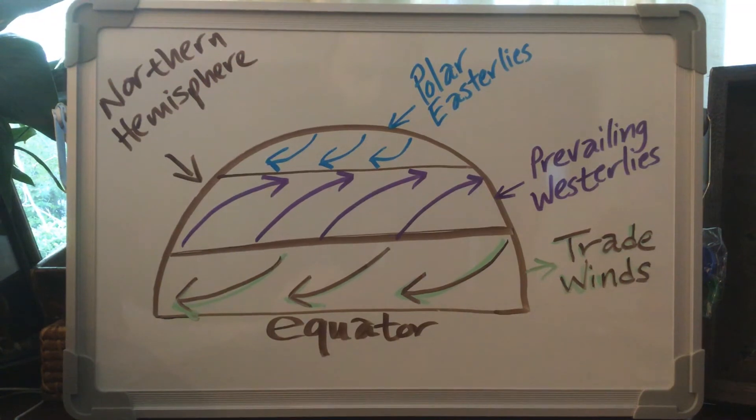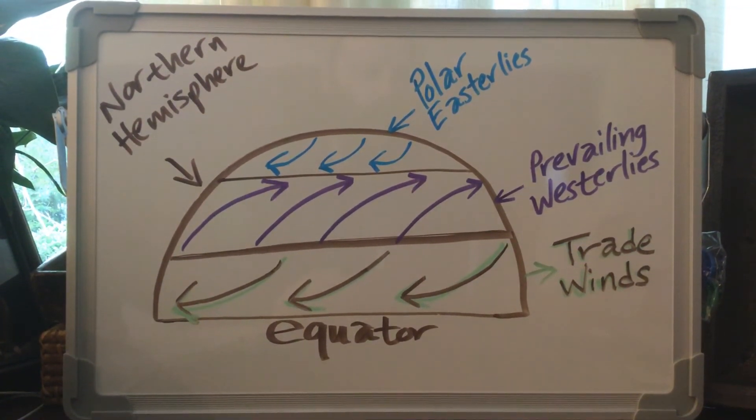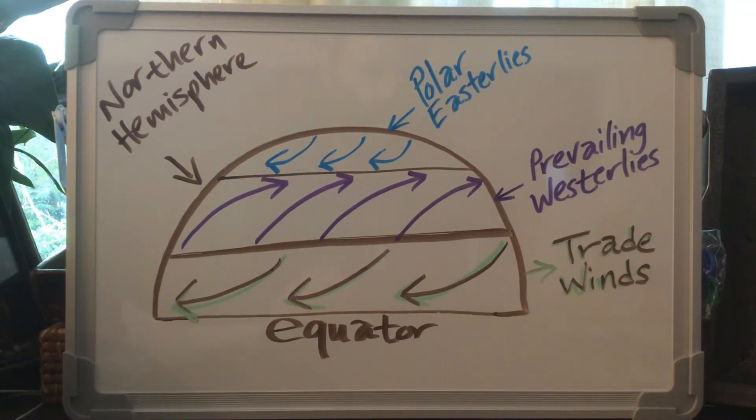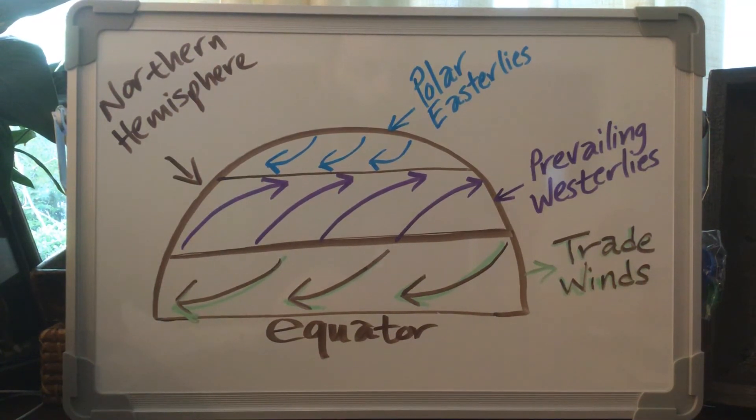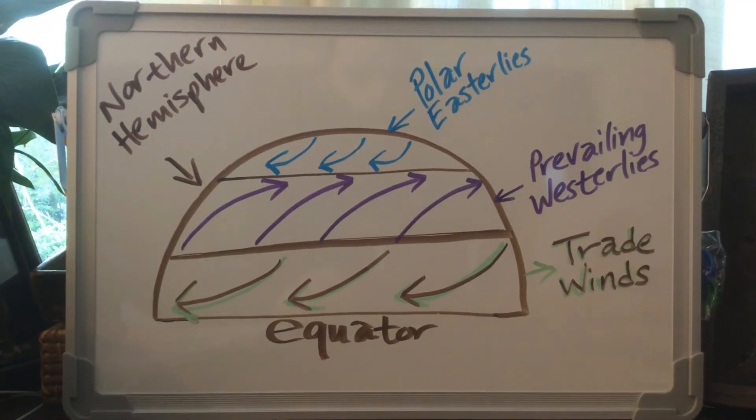Now the polar easterlies are a very cold wind. Cold air is generally always drier than hot air, so it's a very dry, very cold wind.